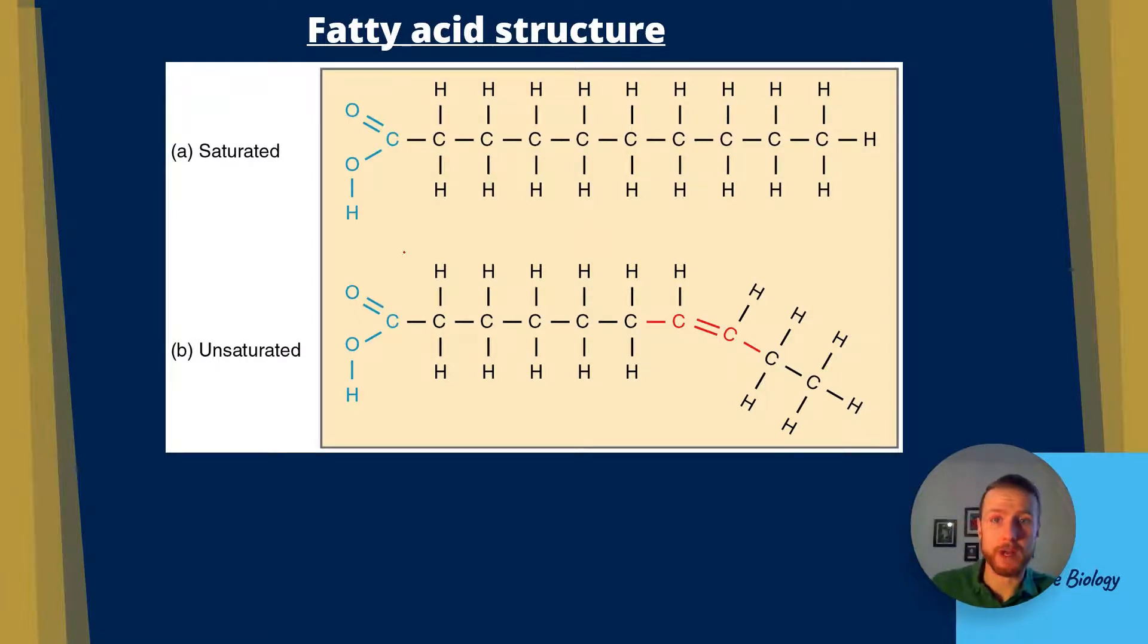This is an example of fatty acid structure. We're going to look at the difference between saturated at the top and unsaturated at the bottom. The saturated one's got the carboxyl group at the beginning, and so does the unsaturated. If we look at the chain, the saturated fatty acid has got single carbon bonds all the way through. Whereas if we look at the unsaturated, it's got single carbon bonds, but then we have a double carbon bond here. The important thing to remember is that carbon can only form four bonds. So we remove a hydrogen there as well. There's no hydrogen at the bottom of that carbon, but there is a double bond there. Unsaturated - double carbon bonds.